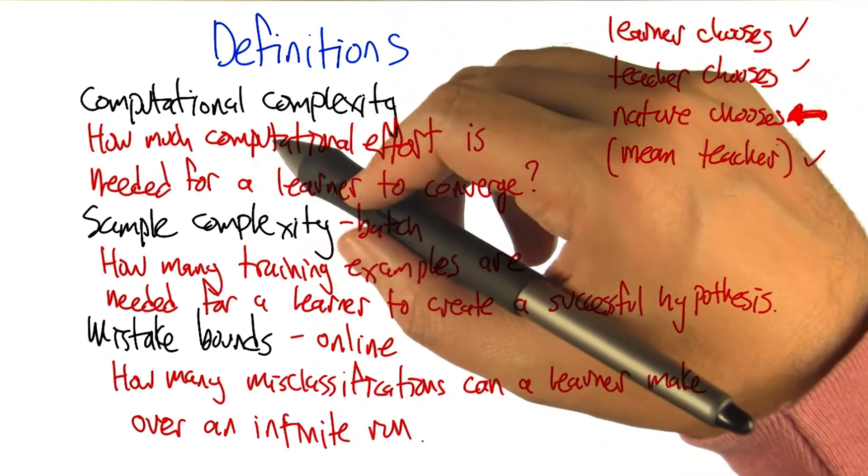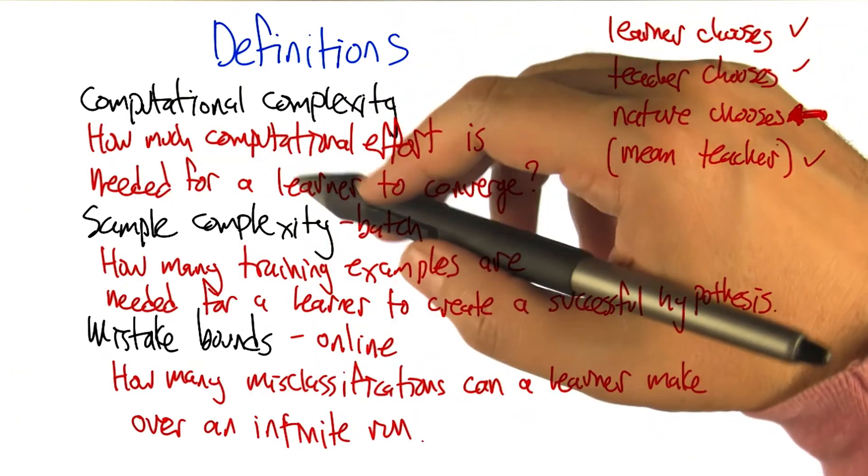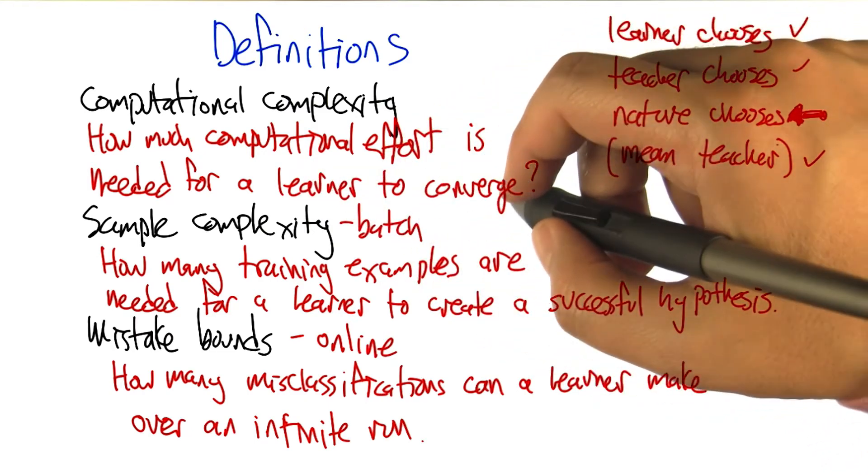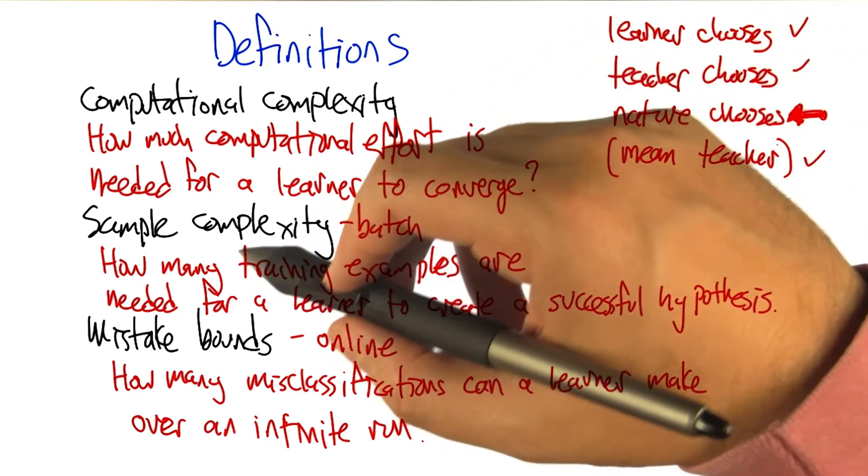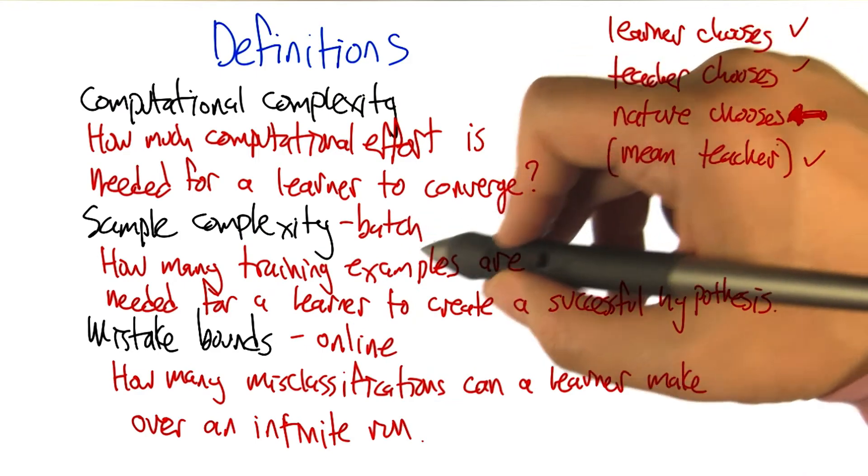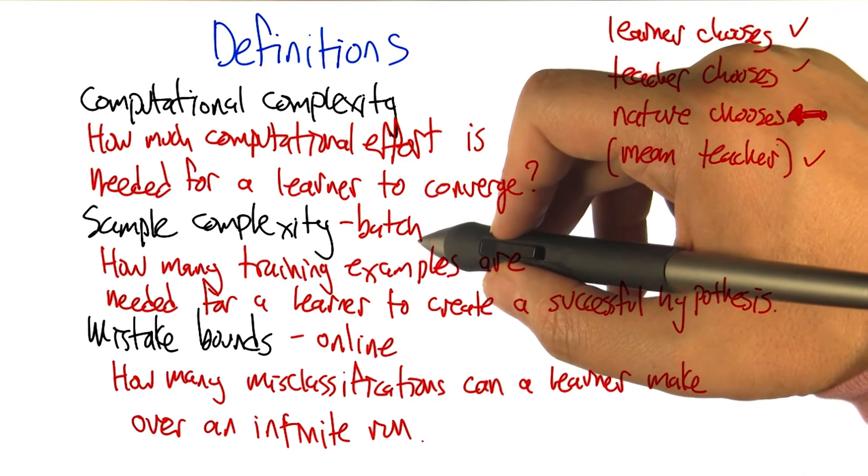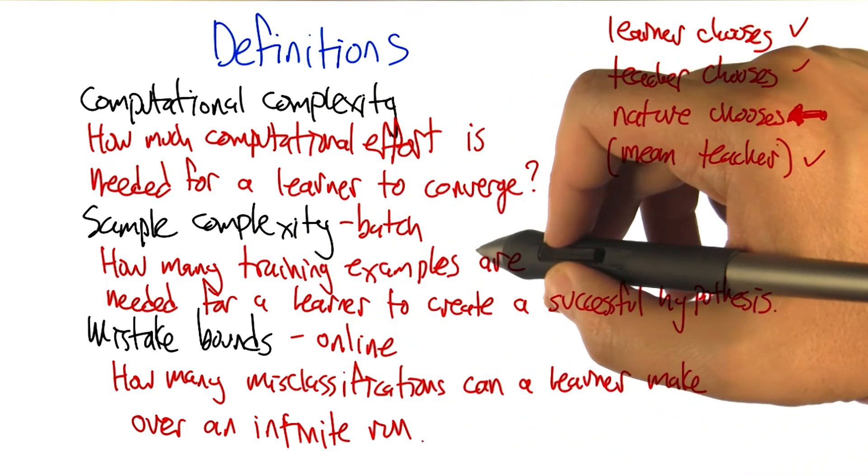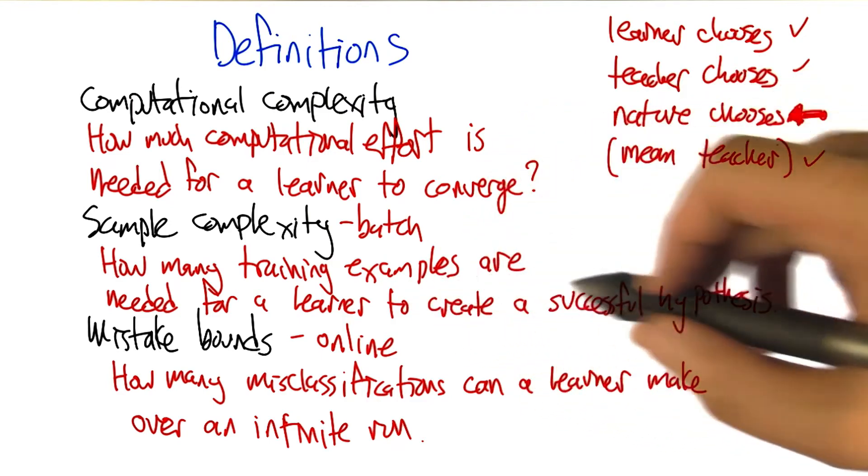So computational complexity, we talked about how much computational effort is going to be needed for a learner to converge to the answer. Sample complexity, in the case of a batch, that is to say we have a training set, is how large does that training set need to be for the learner to be able to create successful hypotheses.